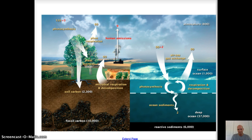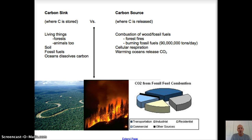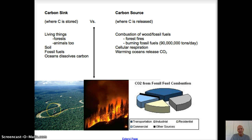Let's look at the difference between a carbon sink and a carbon source. A sink is where carbon is stored; a source is where it's released from. An obvious sink would be a forest — all those trees are made of carbon pulled out of the atmosphere. You are a carbon sink, with carbon stored in your body. Soil as well — what makes soil black is carbon. And of course fossil fuels like coal, natural gas, and oil also contain carbon.